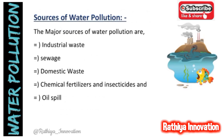Now, sources of water pollution — there are five major sources. The first one is industrial waste. The second one is sewage. The third one is domestic waste. The fourth one is chemical fertilizers and insecticides. And the final one is oil spill.